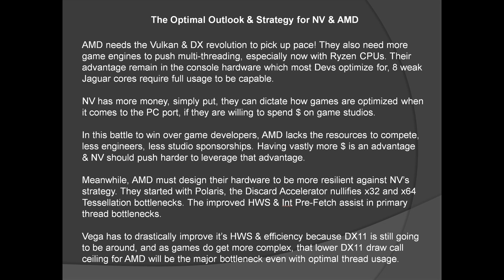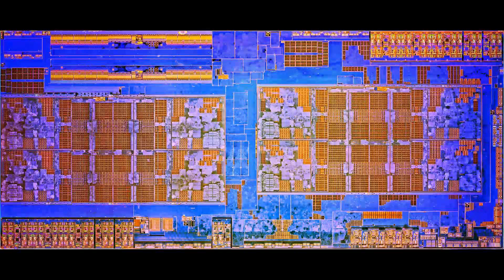AMD has no choice but to design hardware to be more resilient against Nvidia's strategy. AMD started with Polaris: the discard accelerator nullifies tessellation bottlenecks, and the improved hardware scheduler and instruction prefetch slightly alleviates primary thread bottlenecks. Vega has to take this further — it has to improve its hardware scheduler and shader efficiency because DX11 is still going to be important in the foreseeable future. It's going to be a very interesting few years ahead as we witness these great tech companies battle it out.